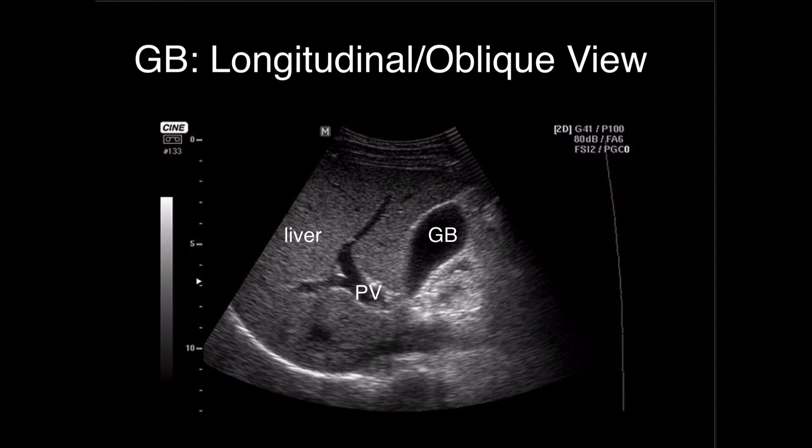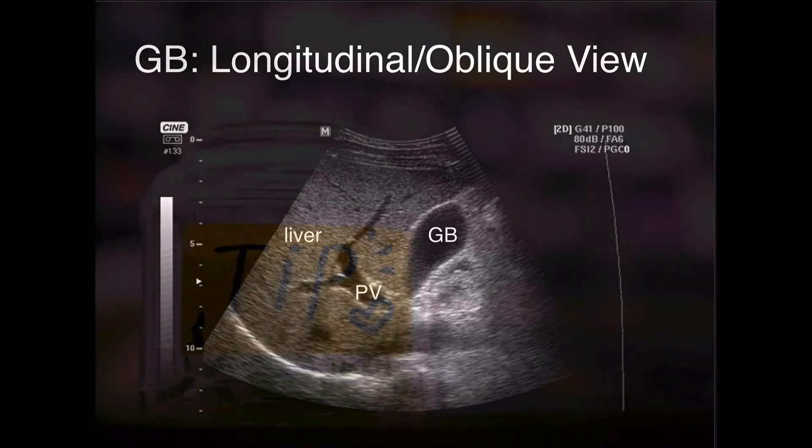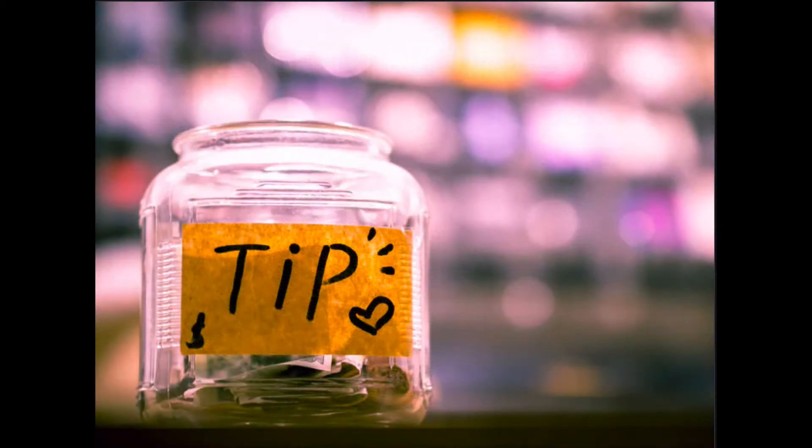In this image, we also see the portal vein coursing through the liver. You can note that the portal vein has pretty hyperechoic walls, which is one of the clues that will help you in identifying it.